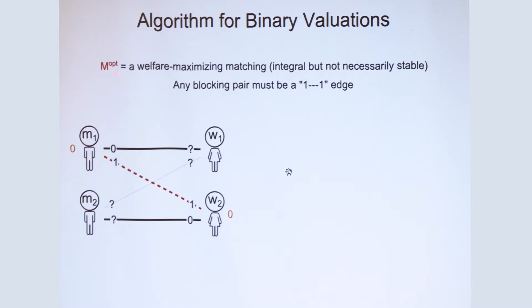And so because this is an optimal matching, it maximizes the welfare, we can actually fill in these missing valuations. There's just one way to fill in these valuations. Otherwise, we can do a welfare improvement. So because of optimality of this matching, if there exists a blocking pair in the optimal matching, it must look like this.